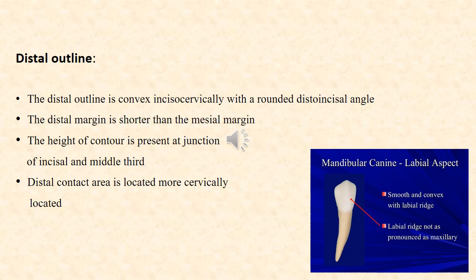The distal outline of the labial aspect is convex incisocervically with a rounded distoincisal angle. The distal margin is shorter than the mesial margin, and the height of contour is present at the junction of the incisal and middle third. The distal contact area is located more cervically compared to the mesial contact area.